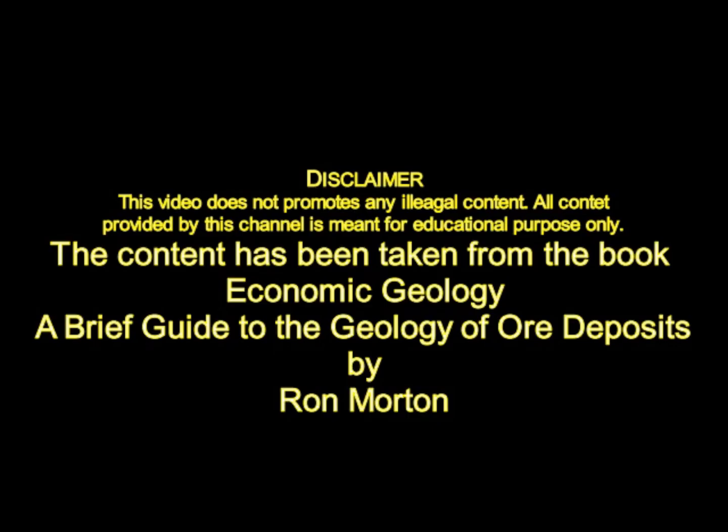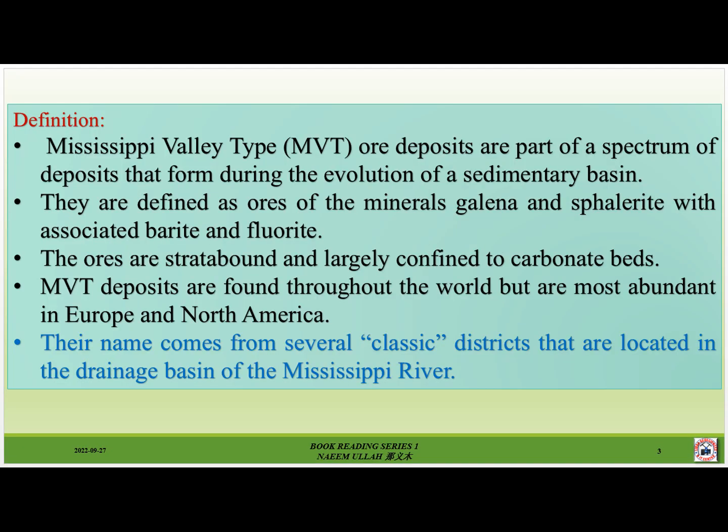Mississippi Valley Type (MVT) deposits are part of a spectrum of deposits that formed during the evolution of a sedimentary basin. They are defined as ores of the minerals galena and sphalerite with associated barite and fluorite. The ores are strata-bound and largely confined to carbonate host beds. MVT deposits are found throughout the world but are most abundant in Europe and North America. Their name comes from several classic districts located in the drainage basin of the Mississippi River.